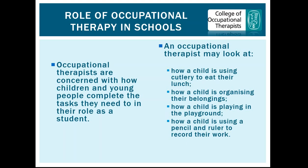An occupational therapist might look at how a child uses their cutlery to eat lunch, how they organise their belongings, how they play in the playground, or how they use tools and equipment — pencils, rulers — to record their work. This works in collaboration with teachers, teaching assistants, and support staff, because they determine what children need to be doing: the lessons, the learning, where they're expected to be in relation to their peers.